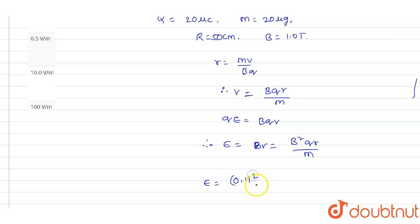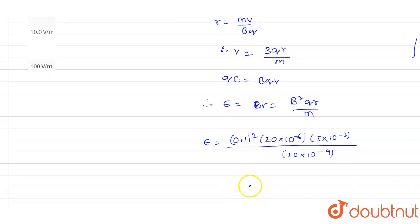So 0.1 square multiplied with 20 into 10 power minus 6, multiplied with 5 into 10 power minus 2, divided by 20 into 10 power minus 9. We will get the value of capital E as 0.5 volt per meter.